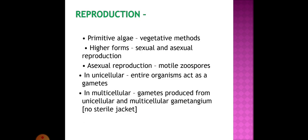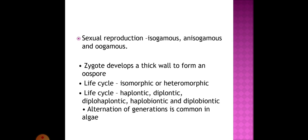Reproduction: The primitive algae reproduction is vegetative mode. Higher forms exhibit sexual and asexual reproduction. Asexual reproduction is through motile zoospores. In unicellular algae, the entire organism acts as a gamete. In multicellular algae, gametes are produced from unicellular and multicellular gametangia which do not have a sterile jacket. Sexual reproduction is either isogamous, anisogamous, or oogamous.